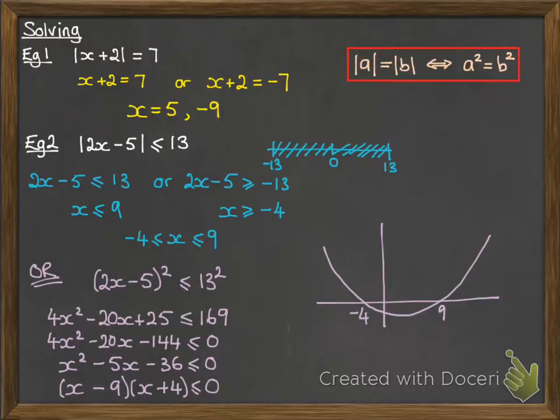Now we just draw a little sketch of what that looks like as a quadratic there. So we're looking for, we've got those critical values of it going through the x-axis at minus 4 and 9. We want to know when it's less than or equal to 0, so that's this area here where it dips below the x-axis. So the solution set there is x between minus 4 and 9.